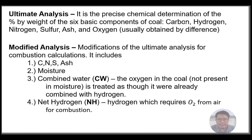Ultimate analysis is defined as the precise chemical determination of percent by weight of the six basic components of coal: carbon, hydrogen, nitrogen, sulfur, ash, and oxygen — with oxygen usually obtained by means of difference.